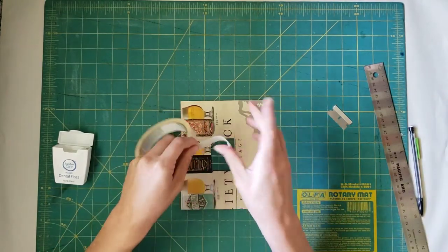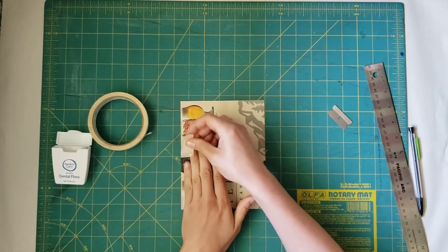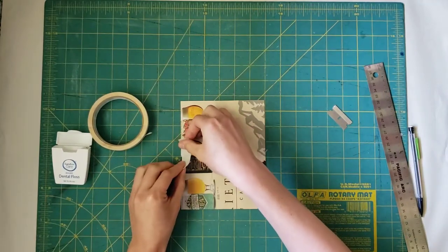Anchor the floss to the back of the viewfinder using any type of tape. You want to keep the front as empty and distraction free as possible.